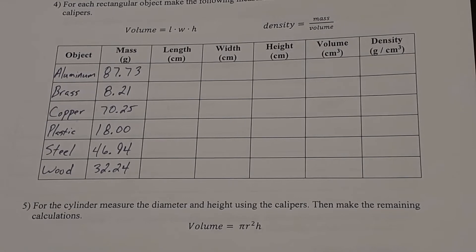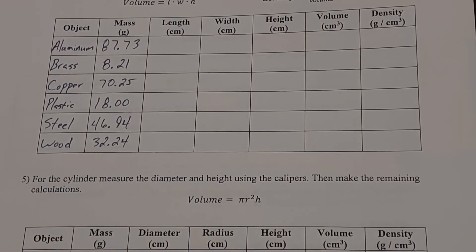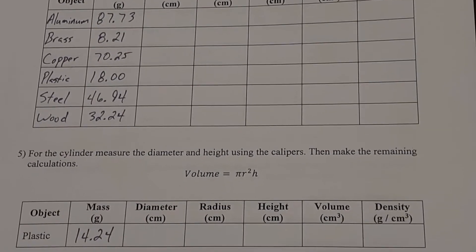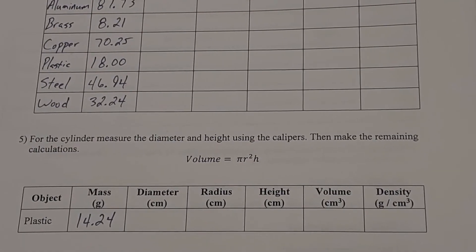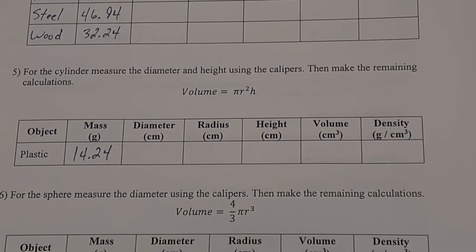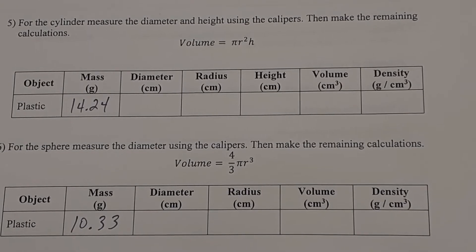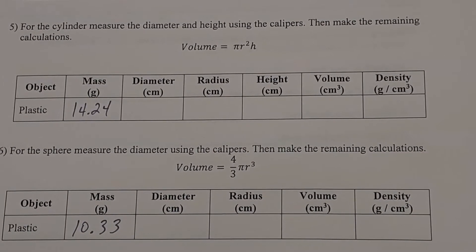So if you need to, you can pause here to have a minute to be able to write down those objects and their masses. And same thing down here as I scan down to the other ones. So the plastic cylinder, you have its mass 14.24 grams. And then the plastic cube is 10.33 grams of mass.